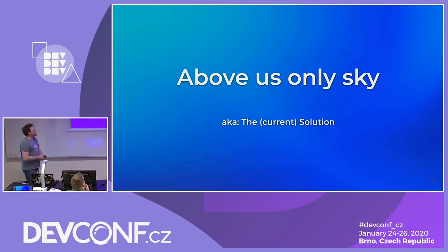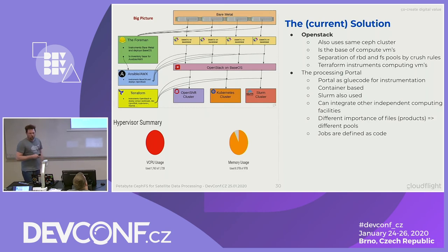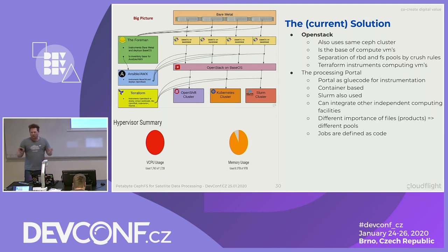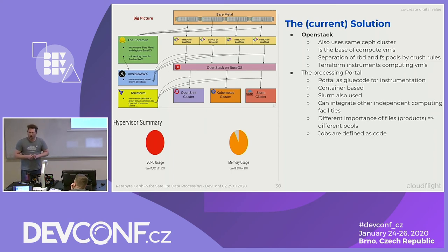Coming to the current solution — what do we have right now? We have OpenStack, which uses the same cluster and the block devices. Why do we use OpenStack? Because we need to dynamically throw away all the compute virtual machines and regenerate them. This works quite well with OpenStack. We have some Terraform recipes in place for that. To give you an idea: 2,072 processing virtual machines, which take half of the cluster resources — about 1,700 CPUs and nine terabytes of RAM — are generated in five minutes. That's quite cool since we can provide colleagues who do the processing the ability to say: throw everything away, start from scratch, use some other algorithms.